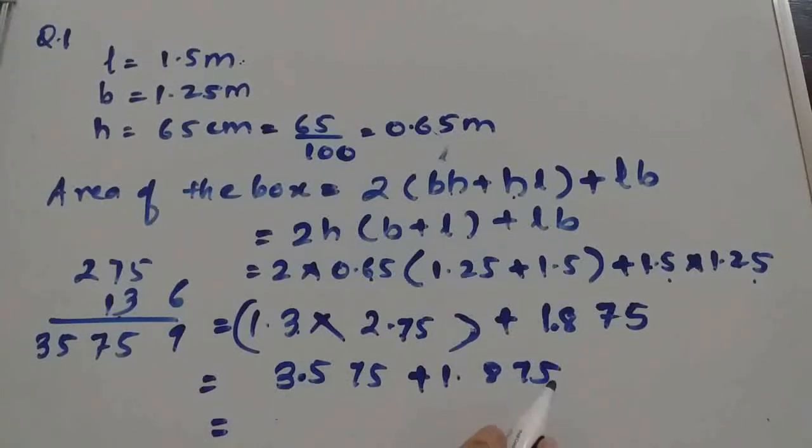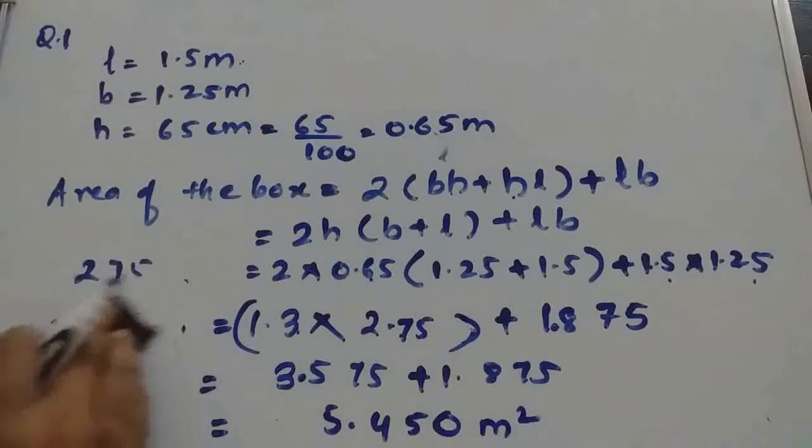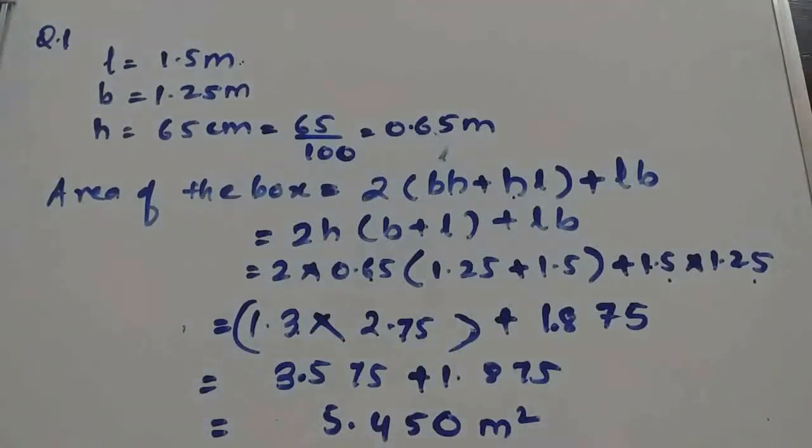Now we will add these two. We will get 5.45. So ultimately this will be 5.45 square meters. This is the area of the box.